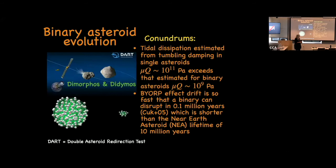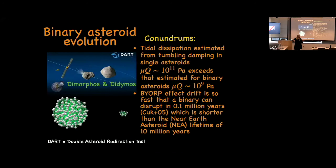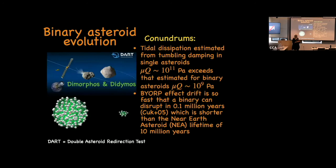The second mystery: radiation effects — BYORP — cause the two asteroids to drift in semi-major axis. The surprise is how fast it's predicted to happen: less than a million years, after which they'd fall apart. But near-Earth asteroids have lifetimes of ~10 million years, so there's an issue accounting for their longevity. BYORP calculations always assume the secondary is tidally locked — and that's something we can question.